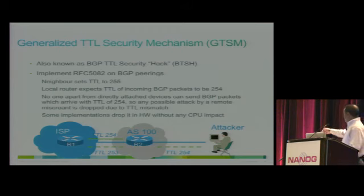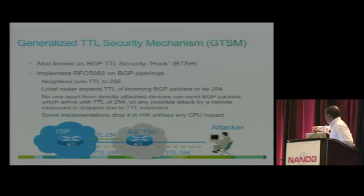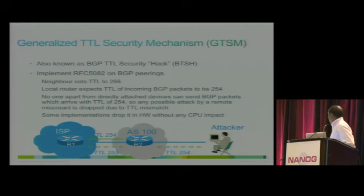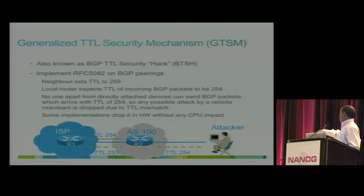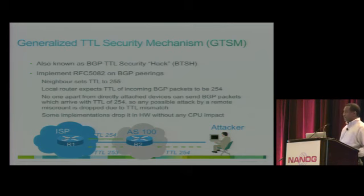Legitimate traffic sets TTL to 255, so it works fine. But somebody from outside trying to hijack your TCP session — by the time the packet arrives to the router, it's already less than the threshold and will be dropped.